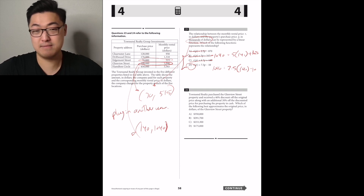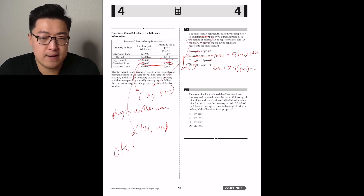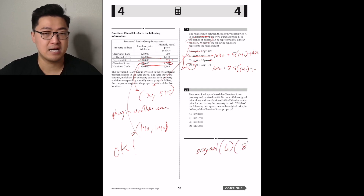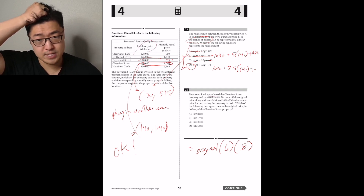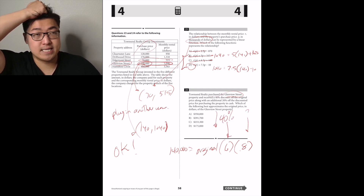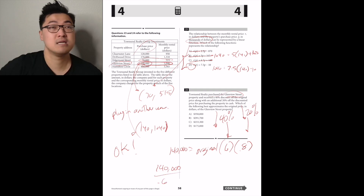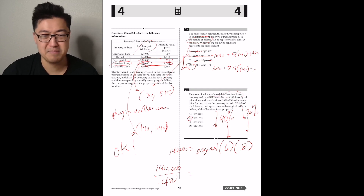Townsend Realty purchased the Glenview Street property with a 40% discount and an additional 20% off the discounted price for paying cash. They paid 140K. A 40% discount means multiplying by 0.6, and a 20% discount means multiplying by 0.8. So 140 equals the original price times 0.6 times 0.8, which is 0.48. Original price is about 140 divided by 0.48 — close to 300. Maybe answer B.